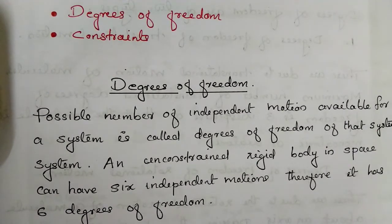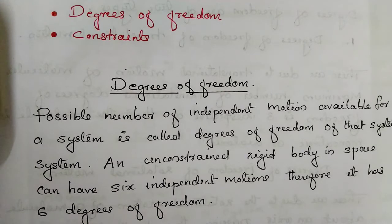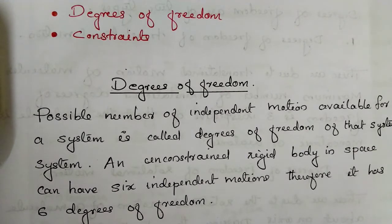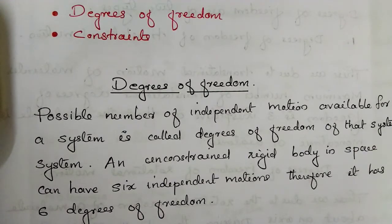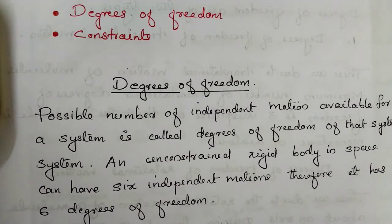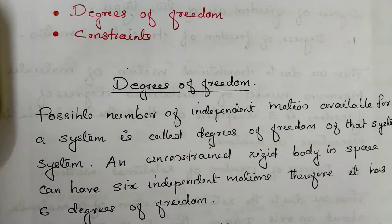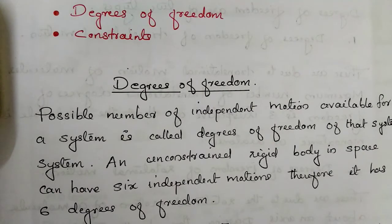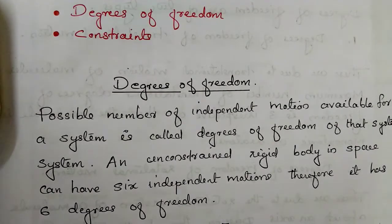What is degrees of freedom? The possible number of independent motions available for a system is called degrees of freedom of that system.